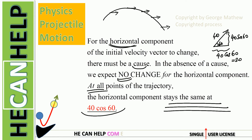And what is that? It's 20 meters per second. So even at the maximum height, it's 20 meters per second. So because the horizontal component of the velocity vector does not change, your acceleration has to be then zero.